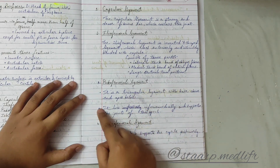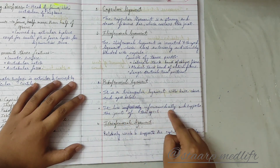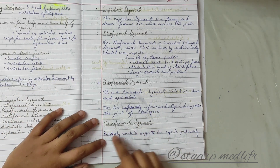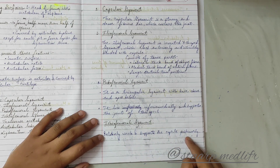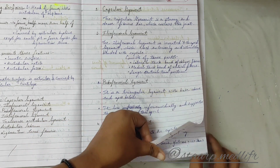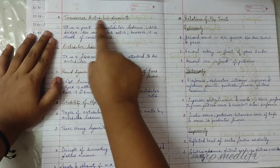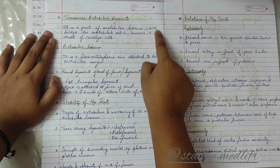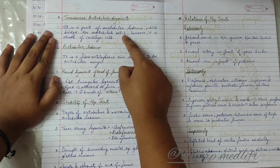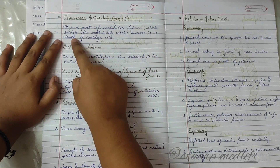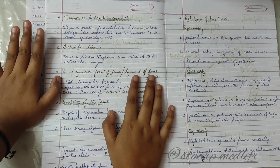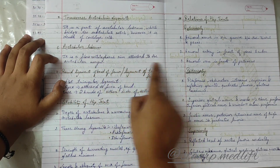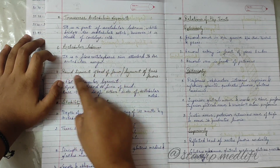The pubofemoral ligament is a triangular ligament with the base above and apex below. It lies inferomedially and supports the joint on this aspect. The ischiofemoral ligament is relatively weak and supports the capsule posteriorly. The transverse acetabular ligament is a part of the acetabular labrum which bridges the acetabular notch; however, it is devoid of cartilage cells.